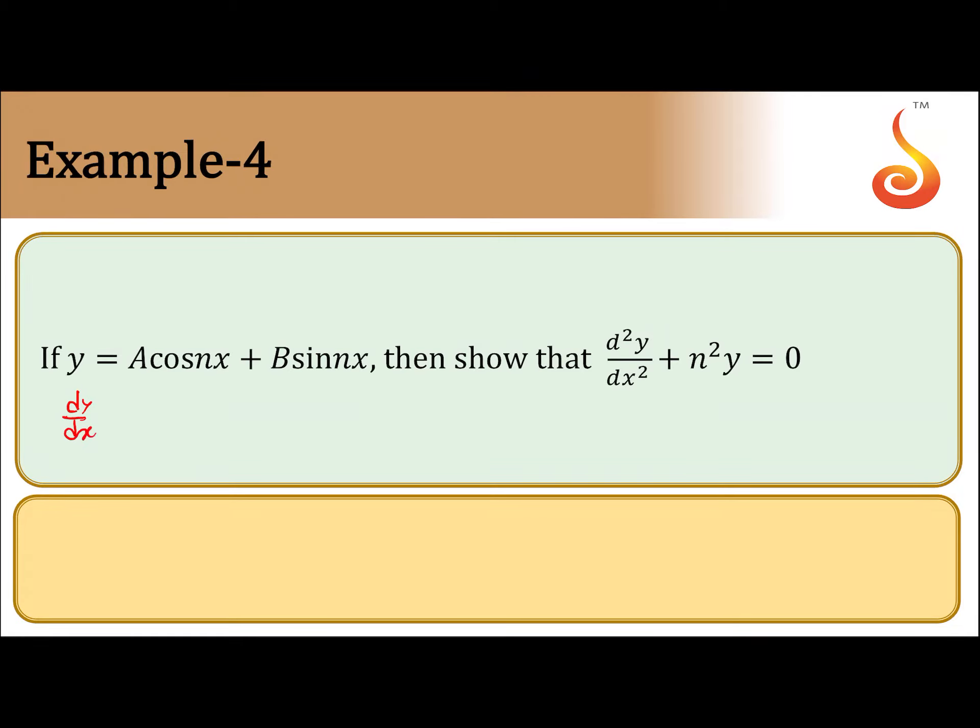dy/dx is equal to d/dx of A cos(nx) plus d/dx of B sin(nx), which will give you minus An sin(nx) plus Bn cos(nx). Very easy to understand dy/dx.